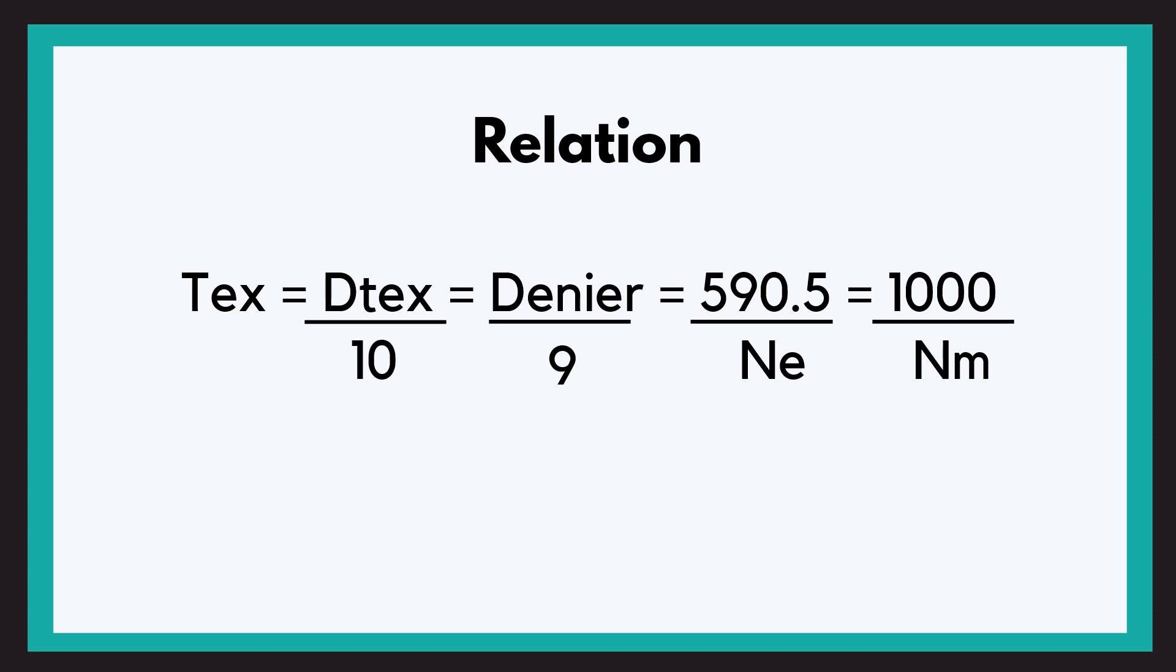So now with this relation in front of you, if someone asks 10 Denier equals how many Tex, you will be smart enough to put 10 in the place of Denier and divide it by 9 to give the answer.